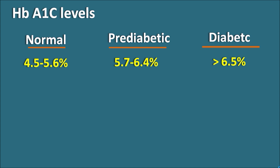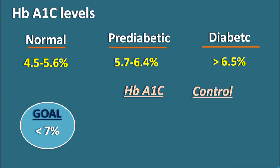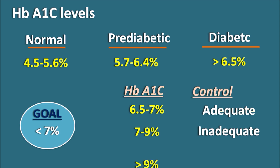Diabetic levels are where HbA1c is greater than 6.5 percent, indicating the patient has excessive glucose levels and is in a diabetic state. What is the goal of controlling HbA1c levels? The normal goal in diabetic patients is less than 7 percent. The control of HbA1c levels can be identified based on range: 6.5 to 7 percent is adequate control, 7 to 9 percent is inadequate and poor control, and greater than 9 percent is very poor control. The normal goal of treatment is to reduce HbA1c levels to less than 7 percent.